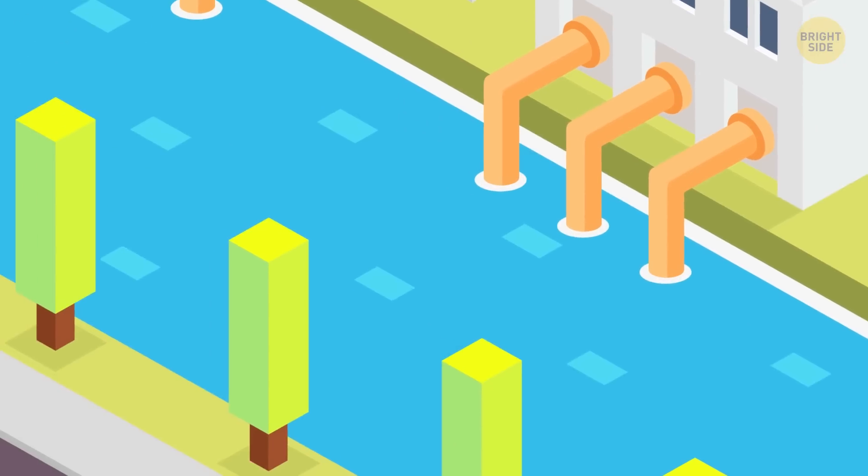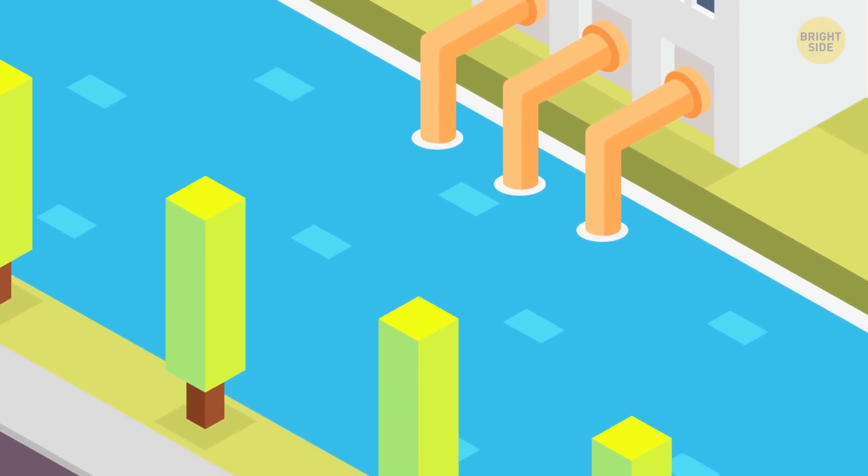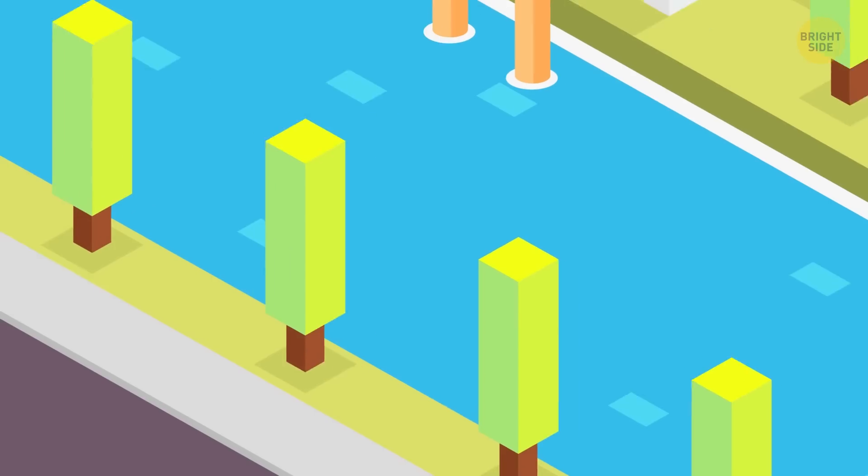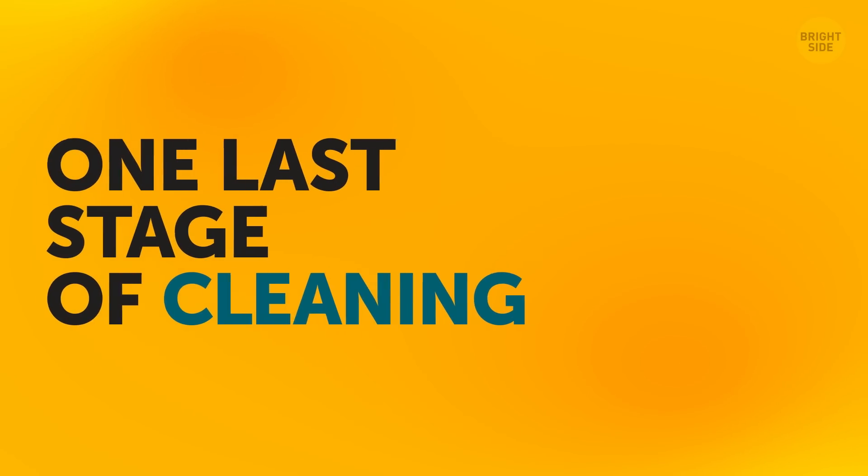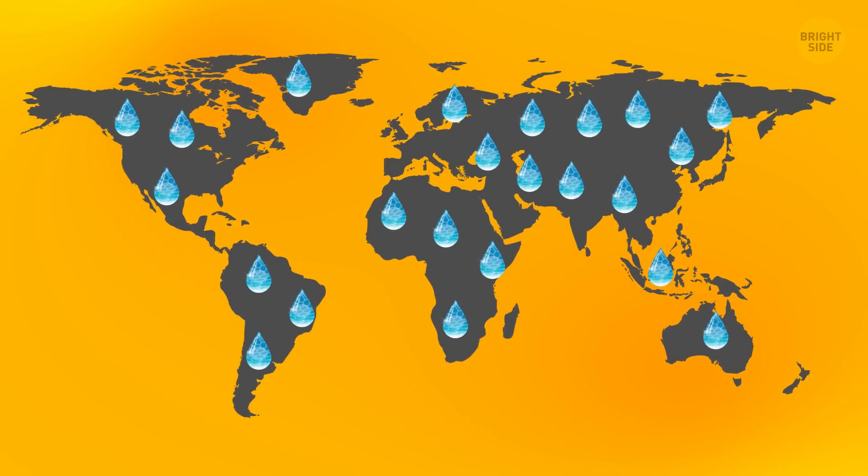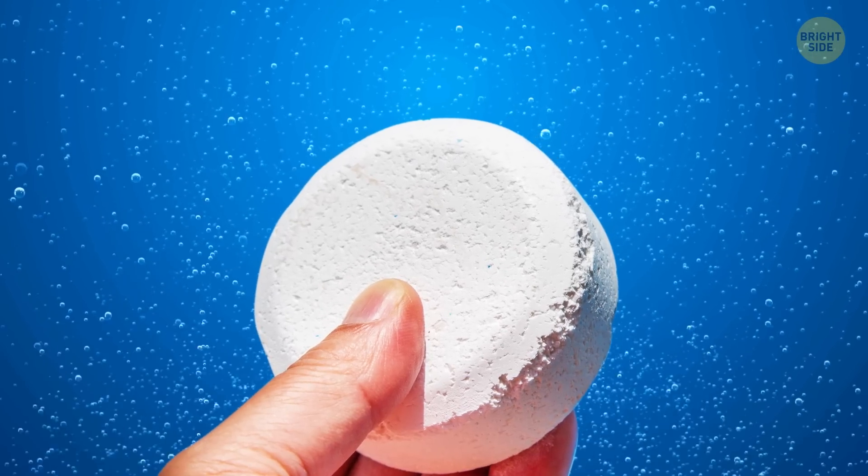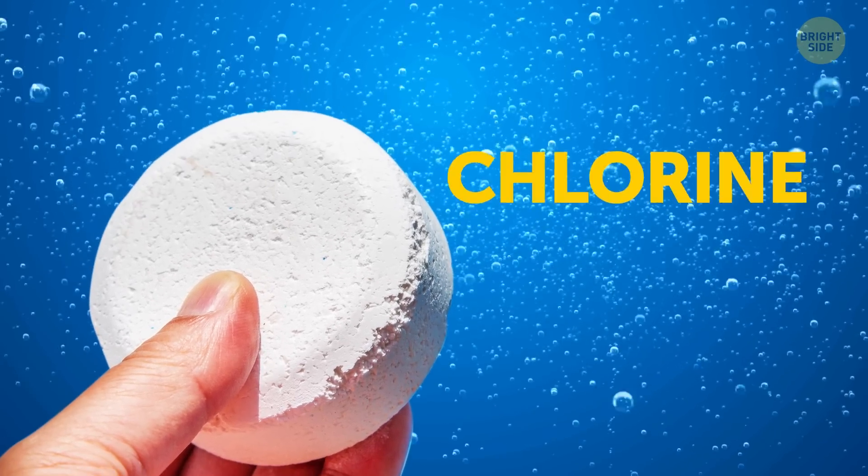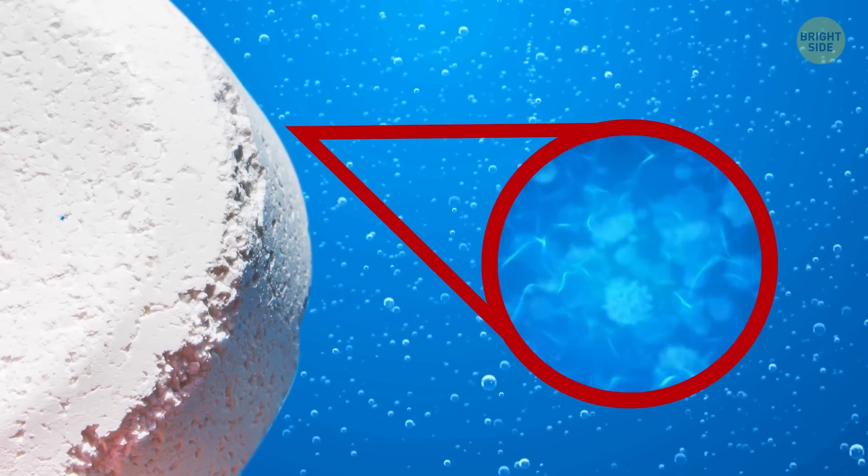In any case, the water gets biologically purified and is almost ready to go back where it came from, meaning seas and oceans. Almost, but not quite, since there's one last stage of cleaning. It differs depending on the country and rules. The most popular method of finishing clean is treating the water with a disinfectant, such as chlorine. It makes the harmful bacteria left in the water vanish, effectively making it clear and ready for use.